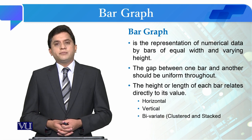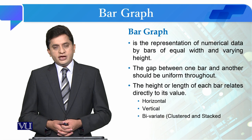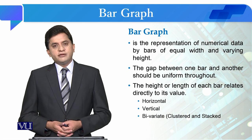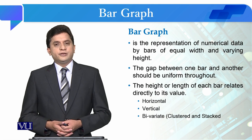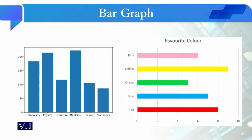There are three types of bar graphs: one is horizontal bar graphs, two is vertical bar graphs, and three is bivariate bar graphs. Bivariate bar graphs are clustered and stacked. The length of each bar in a horizontal bar graph, and the height of each bar in a vertical bar graph, relates directly to its value.